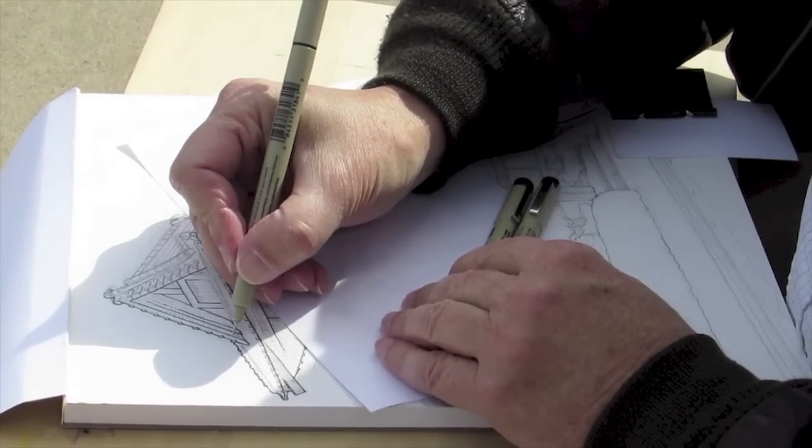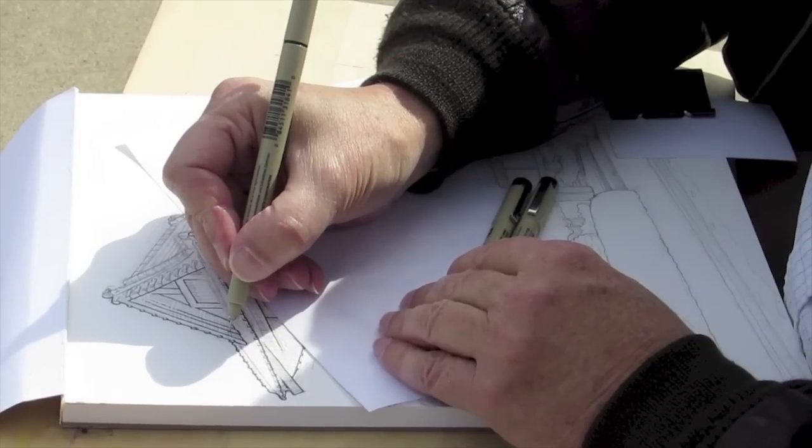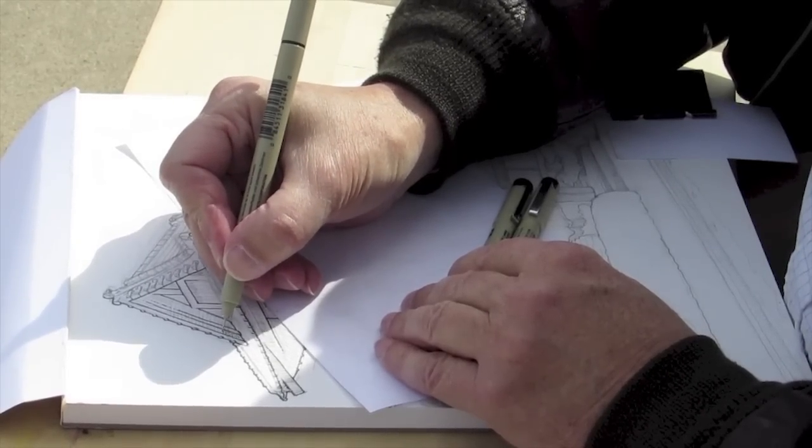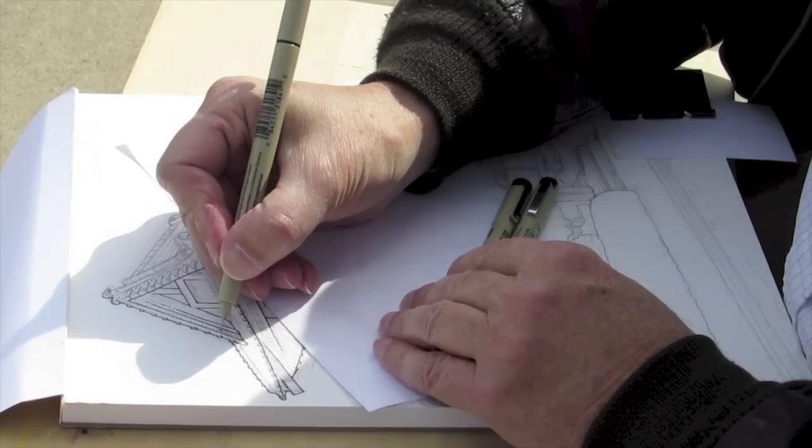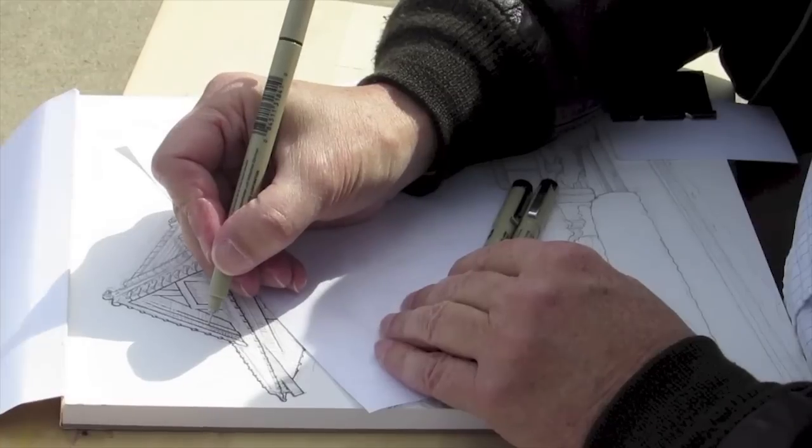At this stage, I recommend that you err on the side of caution. So, for example, if you're not sure if an area is a highlight or a light middle tone, leave it a highlight at this stage.